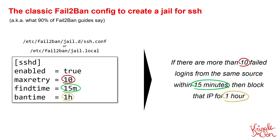The tighter that you make these parameters, the more malicious activity that you're likely to block, but you may also start to block some genuine users as well. Conversely, if you loosen these parameters, you're less likely to have false positives blocking genuine users, but you're also less likely to detect some of the low and slow activity by an attacker.